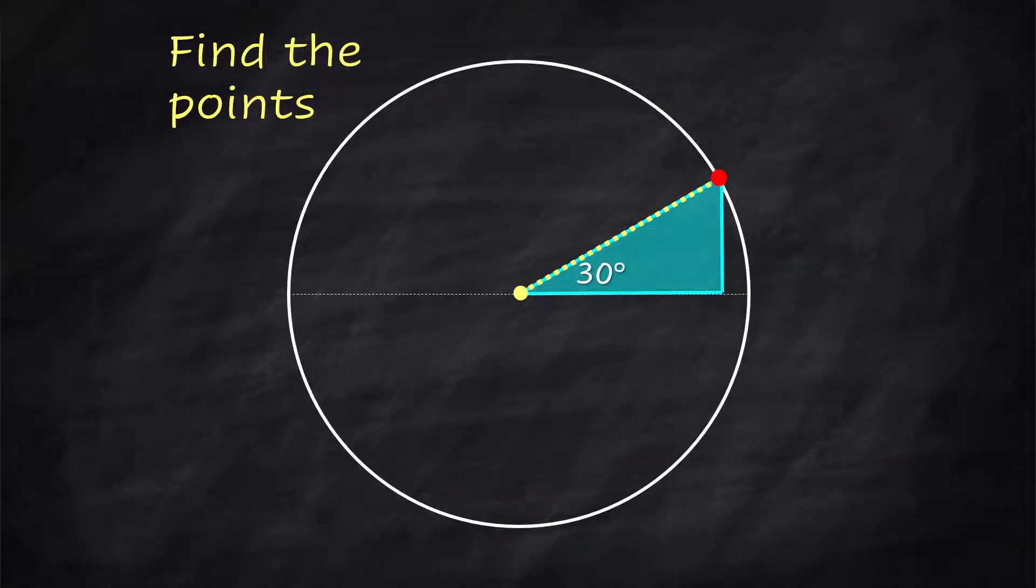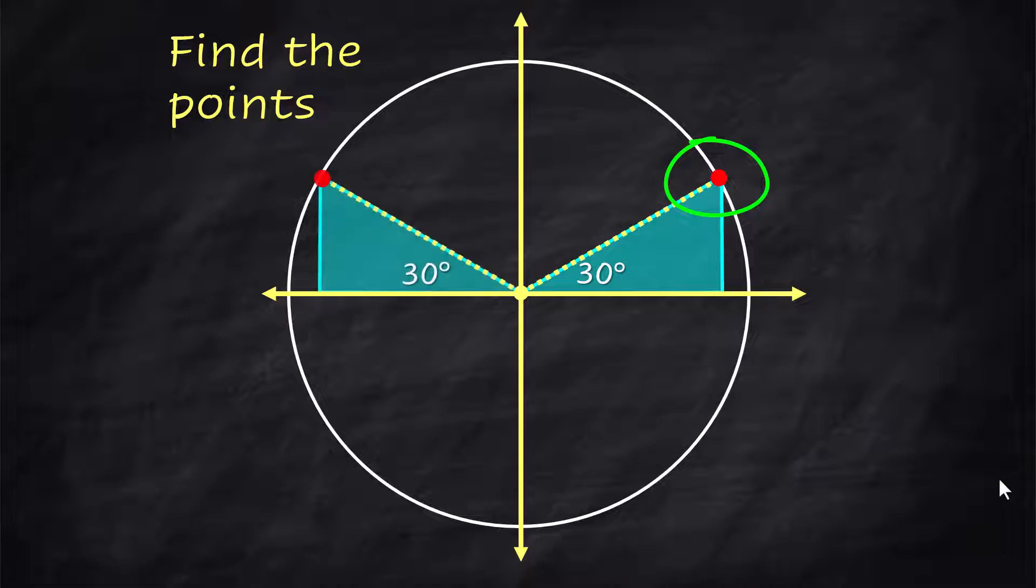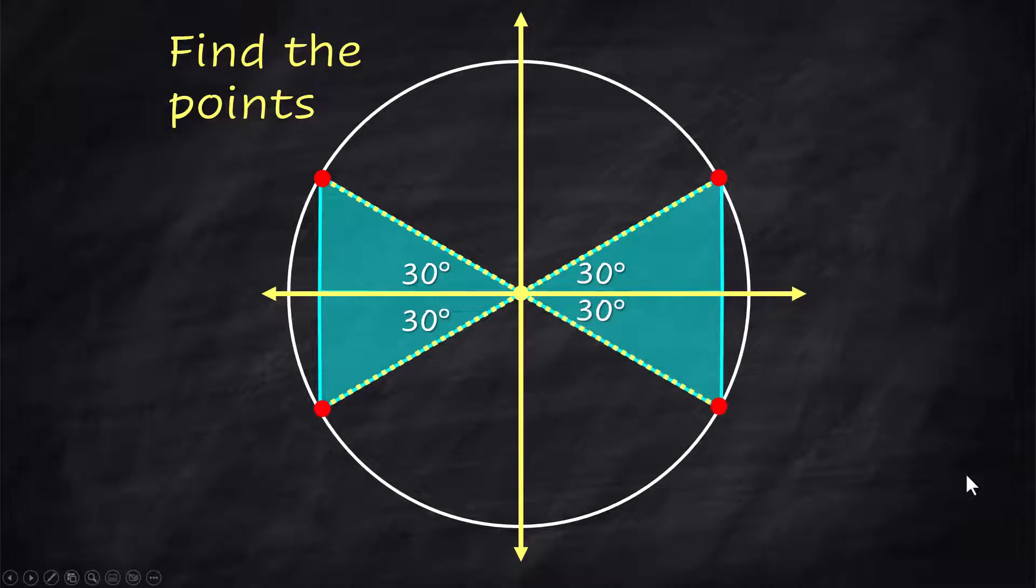Now we're going to find all the rest of the points. And the first set of points I want to find are the ones that have the 30-degree angle as a reference point. Now I want you to think about the center of the circle as the origin on a coordinate grid. This is in quadrant 1. There will be a point in quadrant 2, a point in quadrant 3, and a point in quadrant 4.